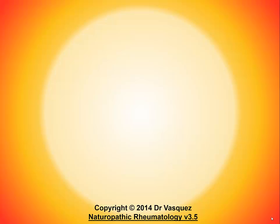Let's take a look at one of my more recent diagrams on dysbiosis. This will be published for the first time in Naturopathic Rheumatology version 3.5. As you look at this diagram, I want you to focus on the four corners — I'm going to show you how to emphasize different types of dysbiosis by location, and then show you how different diseases are represented in what ultimately forms a grid.